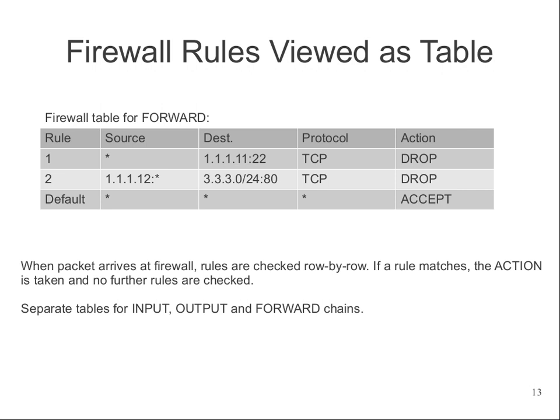A firewall rule table is different from a routing table. A routing table tells you where to send a packet; a firewall rule table tells you whether to send it at all. Both involve inspecting a packet and comparing it against a table, which is why it makes sense to implement a firewall on a router — they already perform this kind of packet inspection.